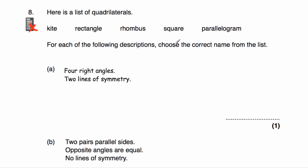Question number eight. We've been given a list: kite, rectangle, rhombus, square, and parallelogram. Part A: four right angles and two lines of symmetry. A square has four lines of symmetry, so it's not a square — the answer is rectangle.